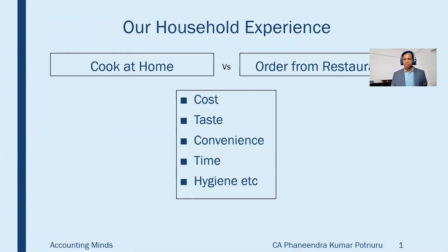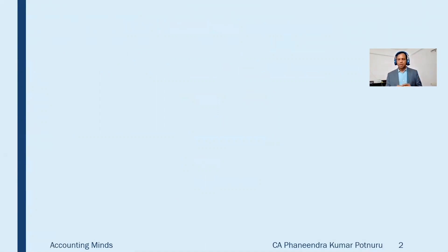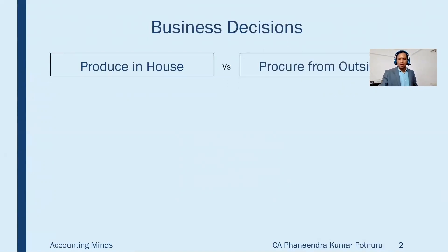We also have situations in our professional life where we make choices. One of the choices we make in our professional life is whether to produce the product in-house or buy from outside. The situation is that you are dealing in a product and you have two options: that product can be produced in-house, or that product can be procured from outside and then sold to the customers. What are the different factors that you need to consider when you make this decision?